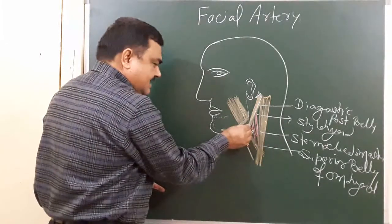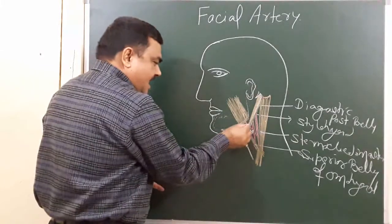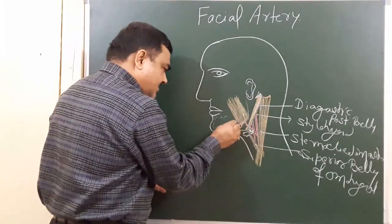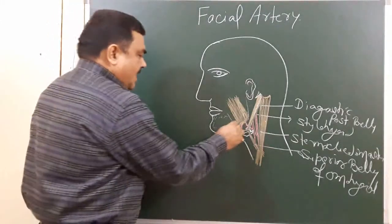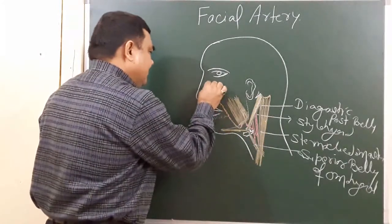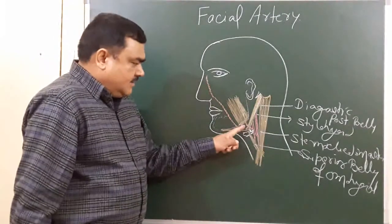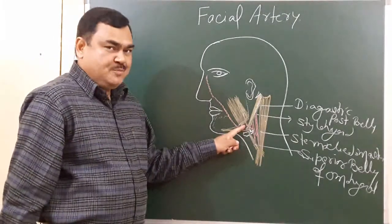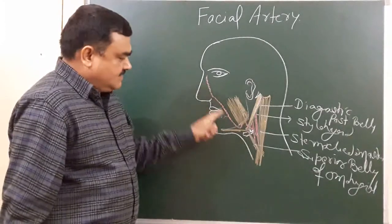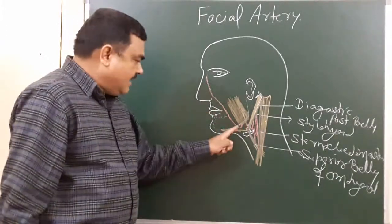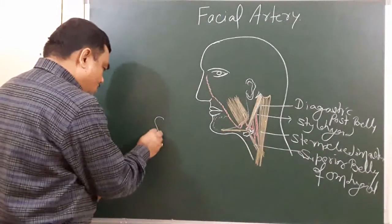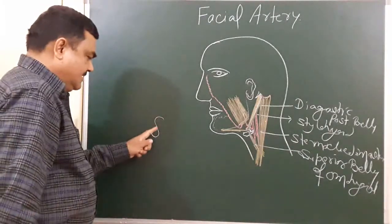The facial artery passes deep to these muscles, then its course is tortuous — it runs upward, then downward, and then comes into the face. Throughout its whole course it is not straight; it is tortuous. In the cervical region it lies on the superior constrictor of the pharynx. The facial part is in the face and the cervical part is in the neck. In the cervical region its course is S-shaped, having two curvatures.